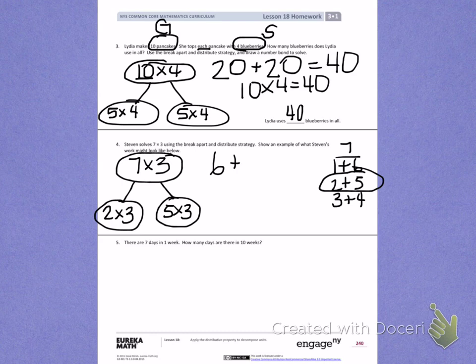5, 10, 15. 6 plus 15 equals 21, which means Stephen found out that 7 times 3 equals 21.